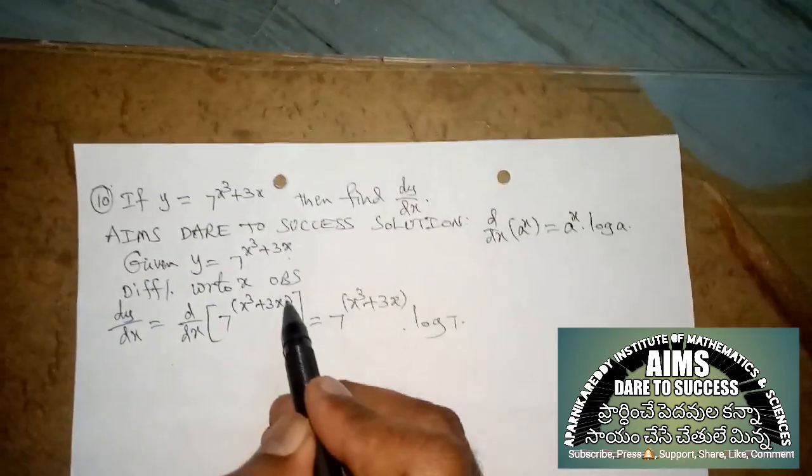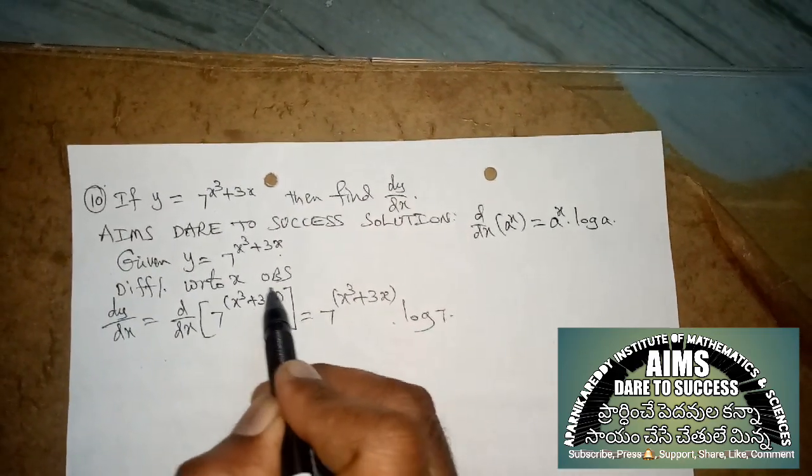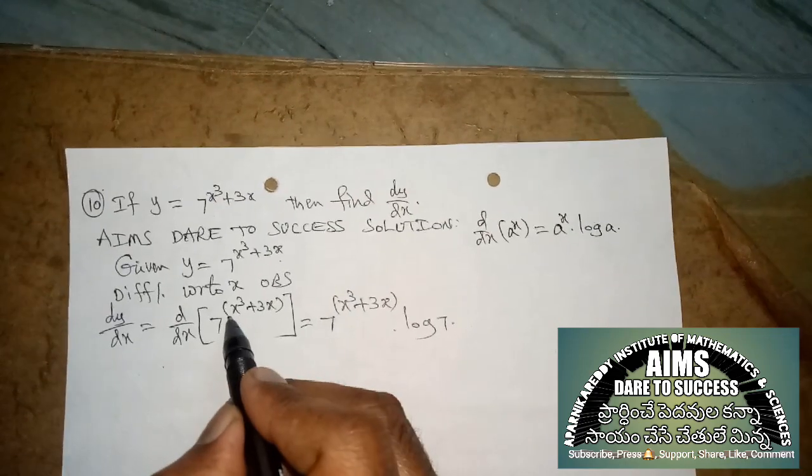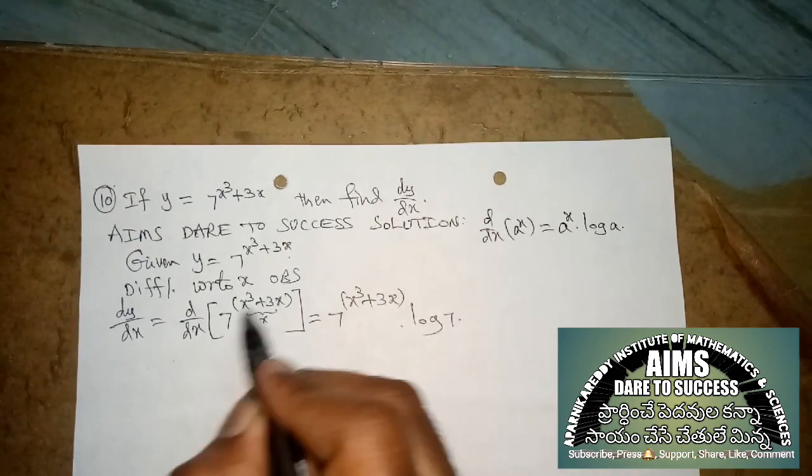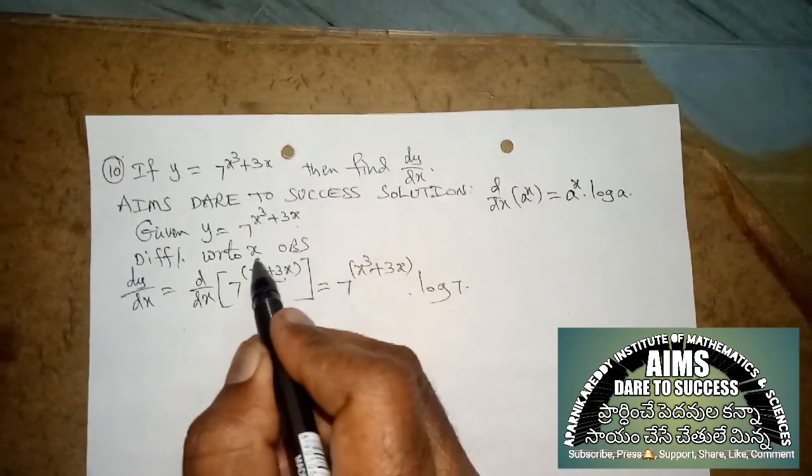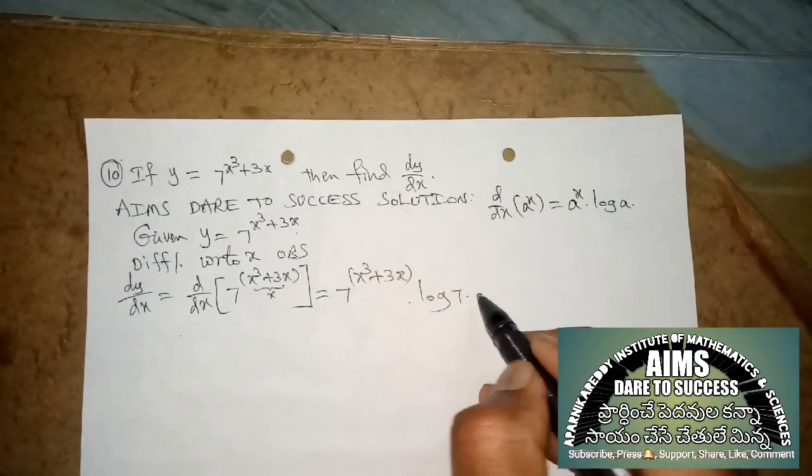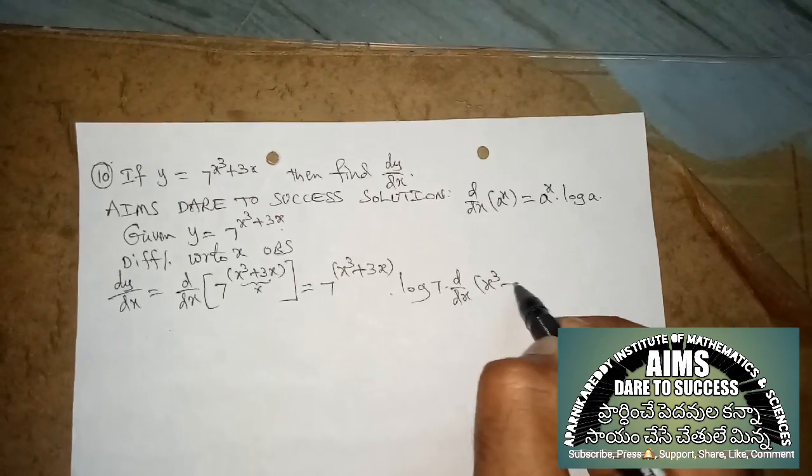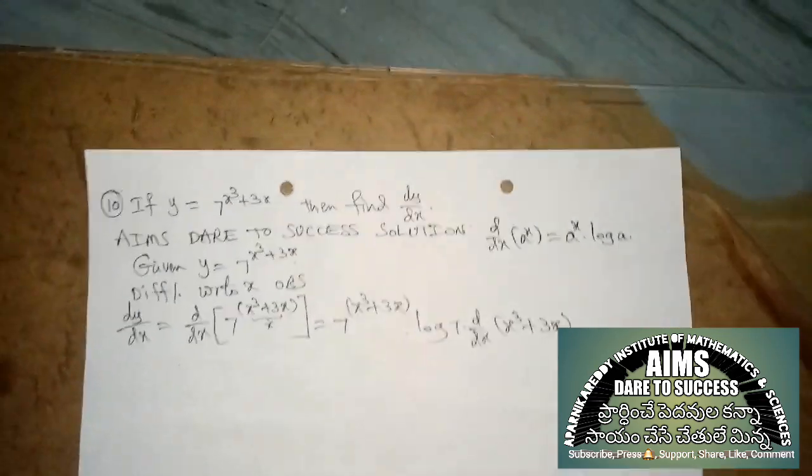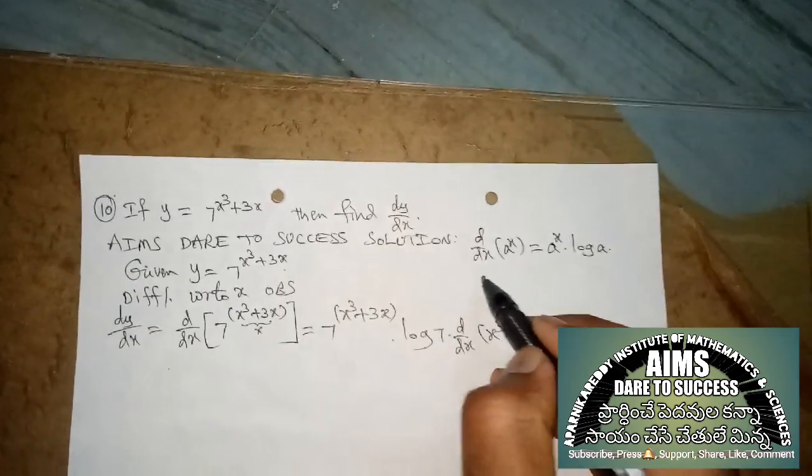log(7). Coming to the power, it is in the form of x only but not exactly x. That's why we are applying the derivative d by dx of (x³ + 3x).